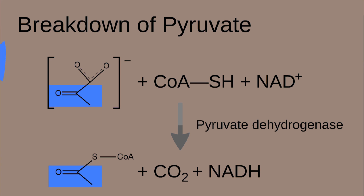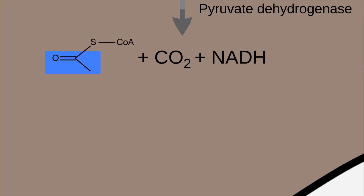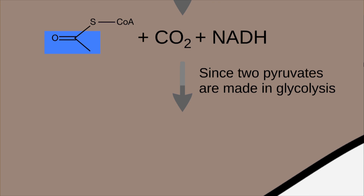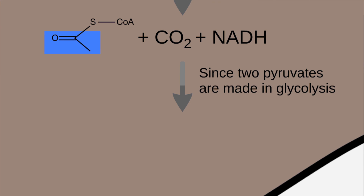To attach the acetyl group to CoA, pyruvate dehydrogenase removes a hydrogen from CoA. This hydrogen is then transferred to NAD+, creating NADH, which will be useful later in oxidative phosphorylation. Since two pyruvates are created from one glucose molecule, the products of breakdown of pyruvate are two carbon dioxide, two acetyl CoAs, and two NADH molecules per glucose molecule.